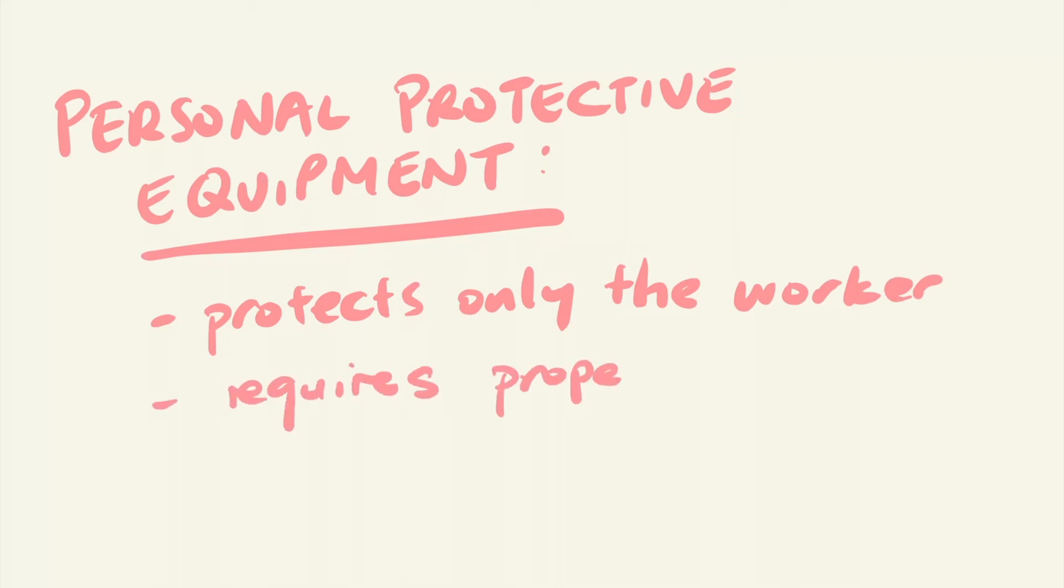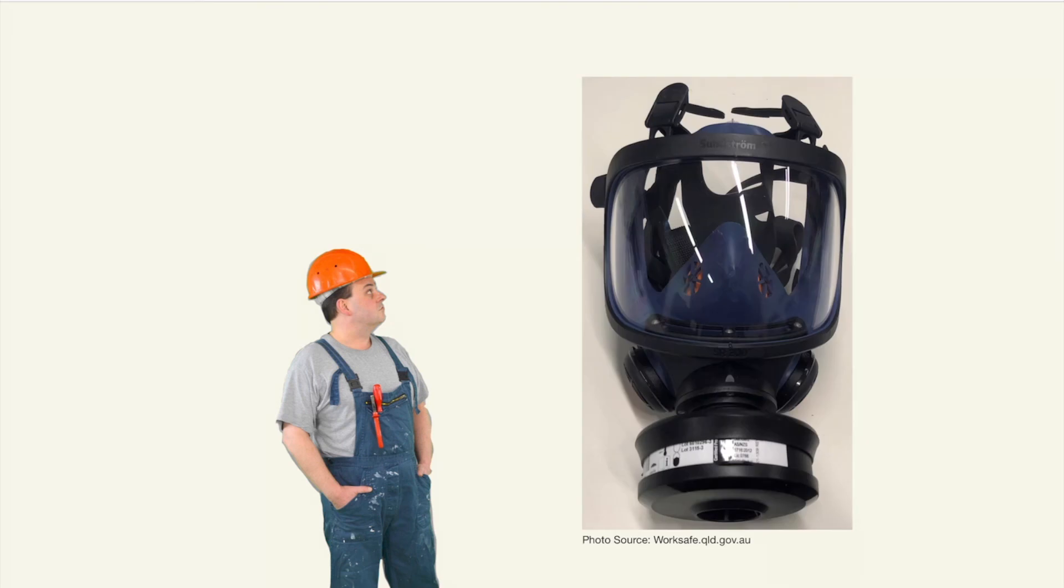Examples of PPE include earmuffs, respirators, hard hats, gloves and protective eyewear. For Bob, this would involve the wearing of a respirator such as a full face mask with personal oxygen supply, which would provide protection on inhalation of harmful airborne particles in the surroundings.